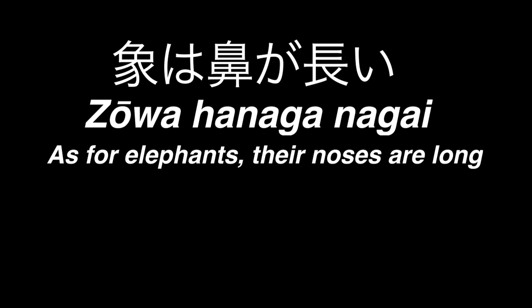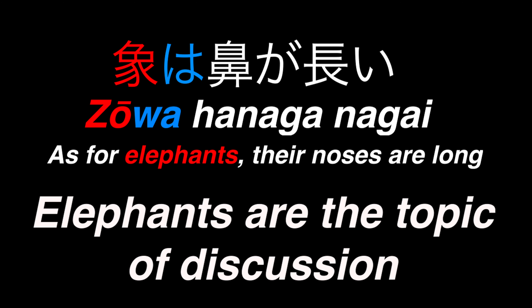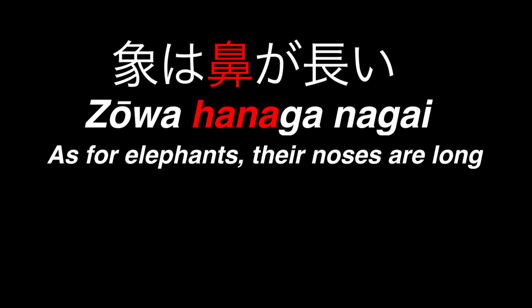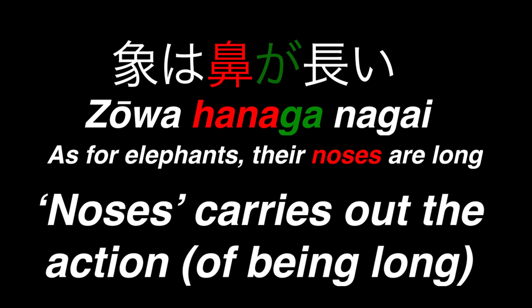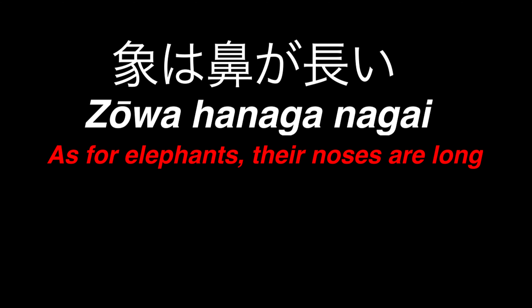For example, in a sentence like zō wa hana ga nagai: zō means elephant and is given the topic marker wa, meaning elephants is what's being talked about. Hana means nose and is given the subject marker because it carries out the action of being long. You can translate the sentence as: as for elephants, their noses are long.